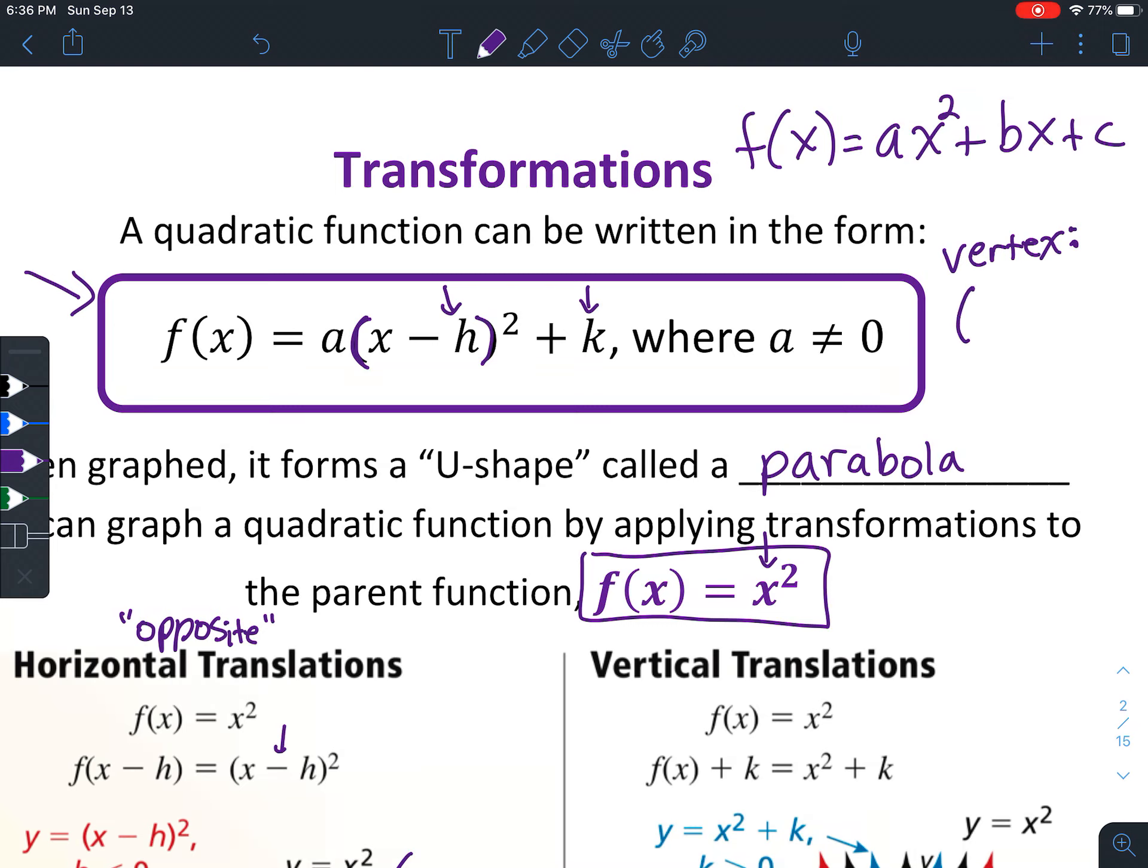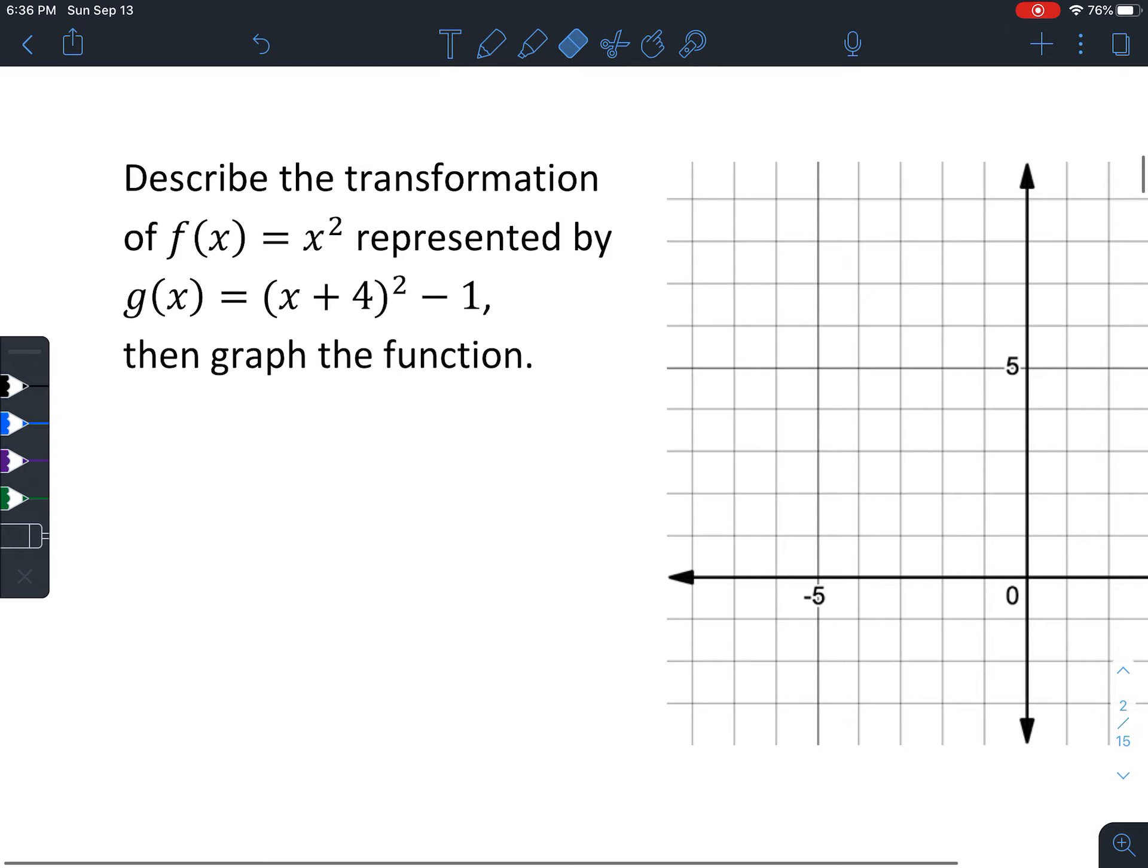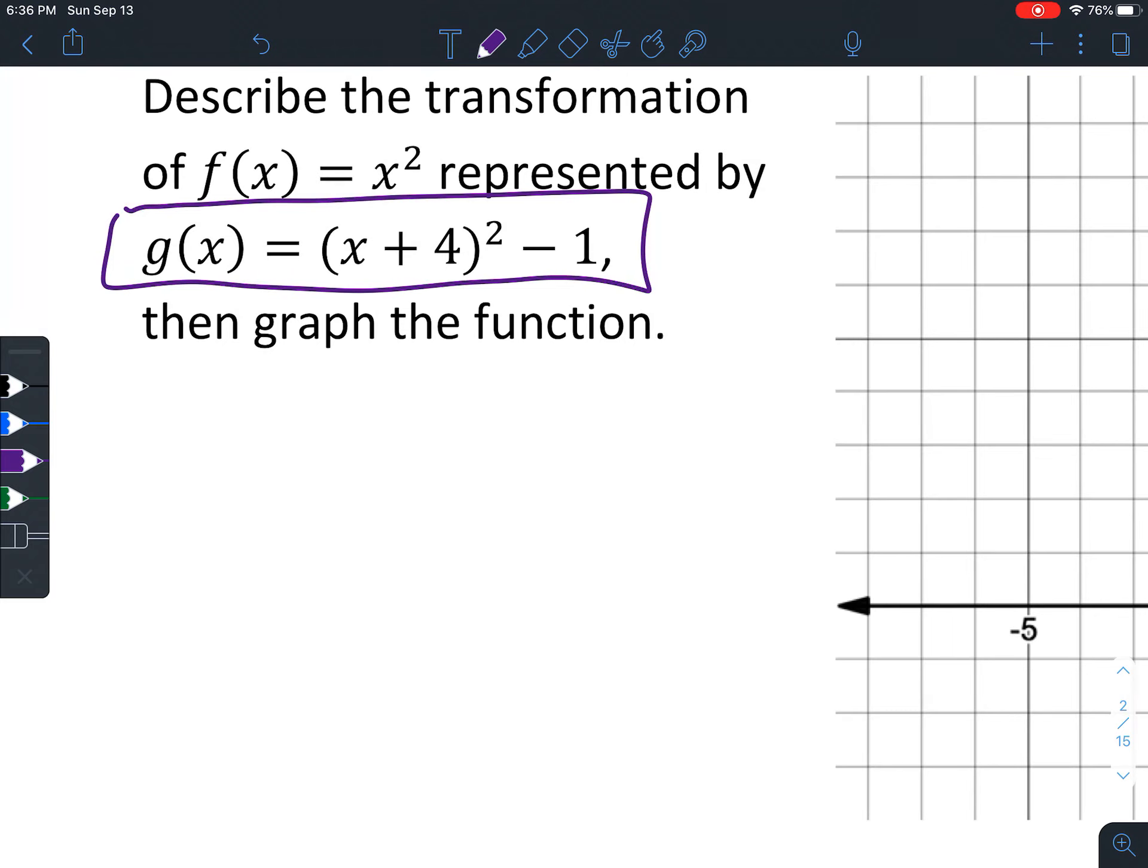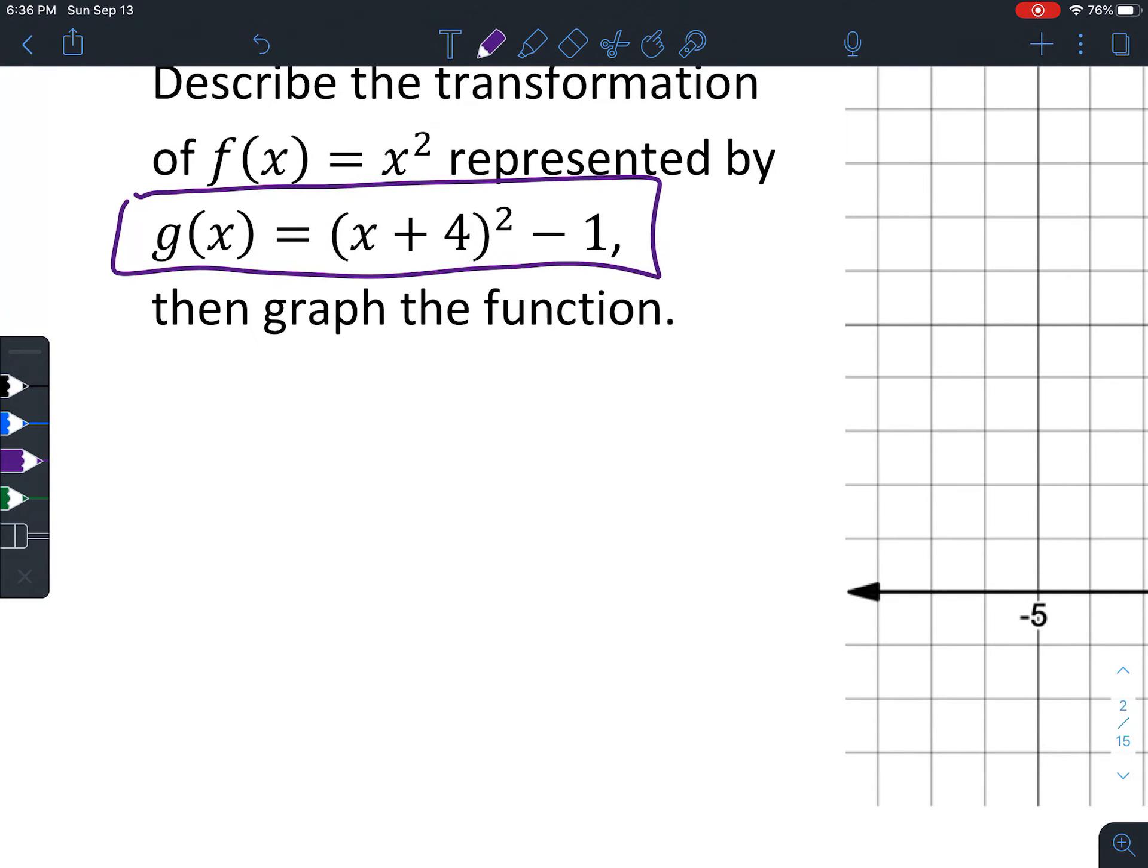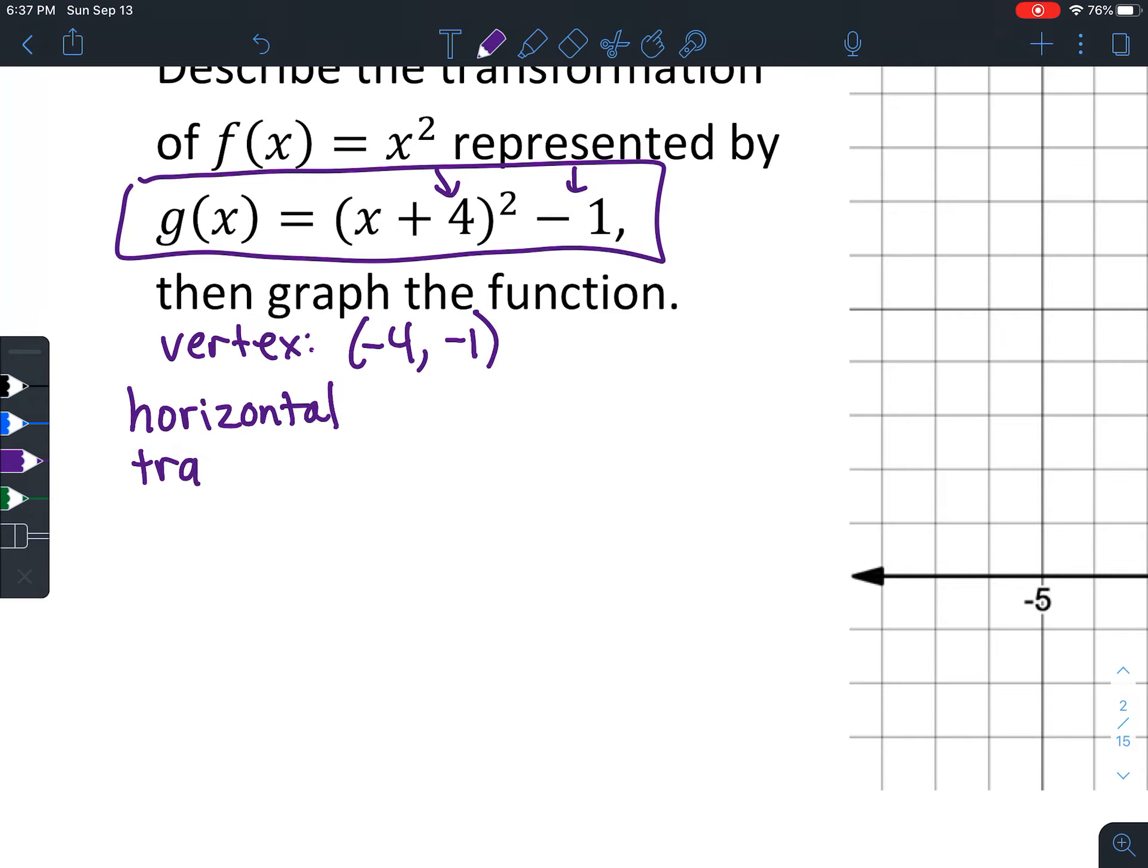Notice that the h has a subtraction right here. We'll talk about that as we're doing this example. Describe the transformation of f(x) = x² represented by g(x) = (x + 4)² - 1. Now right off, you know what the vertex is. I always like to think immediately that the vertex is this point right here, which is (-4, -1).